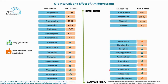Looking at QTc interval and antidepressants: tricyclics are right at the top of the risk spectrum — desipramine, doxepin, and trimipramine, with imipramine also notable. The numbers range from around 8 to 11 milliseconds at the lower end, and almost a 20-millisecond increase from baseline at the upper end of the spectrum.